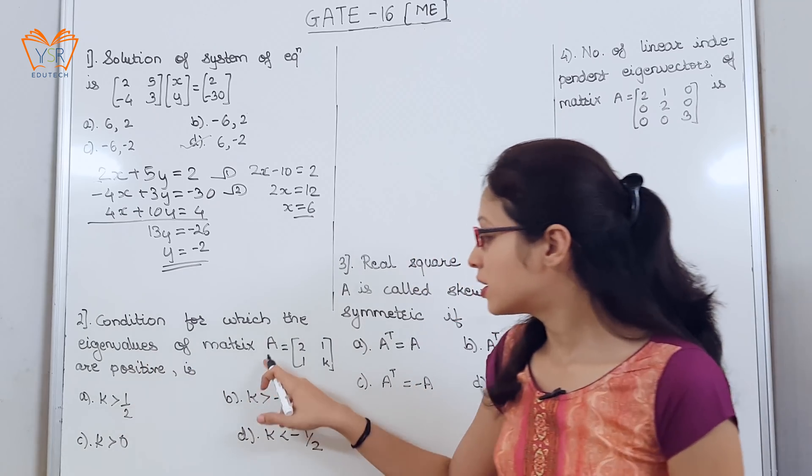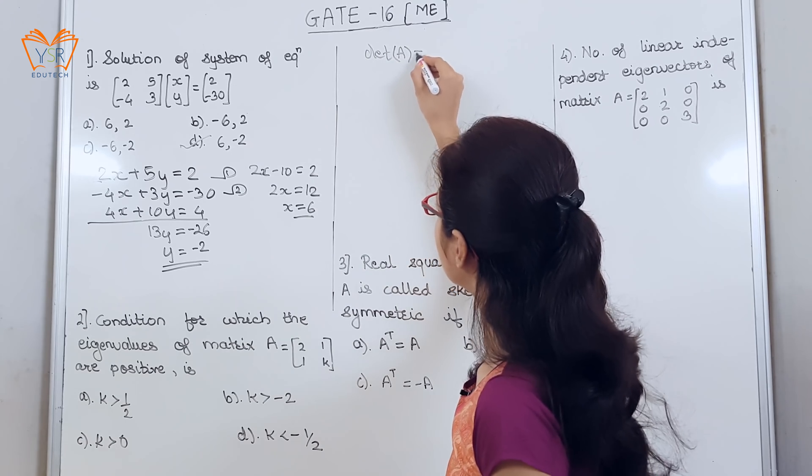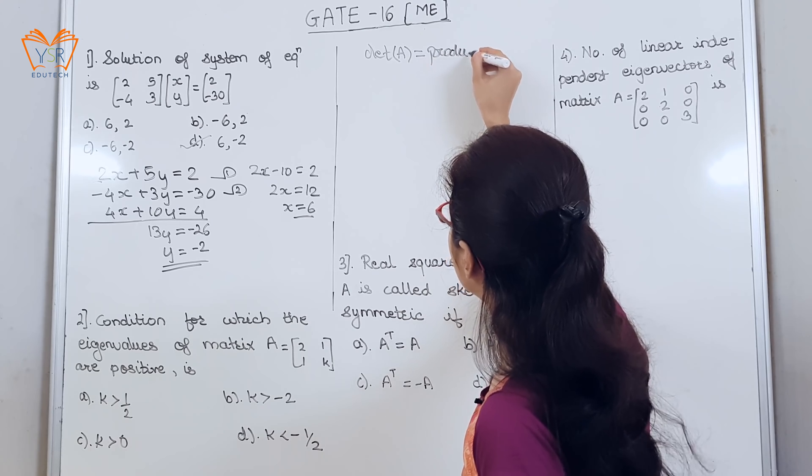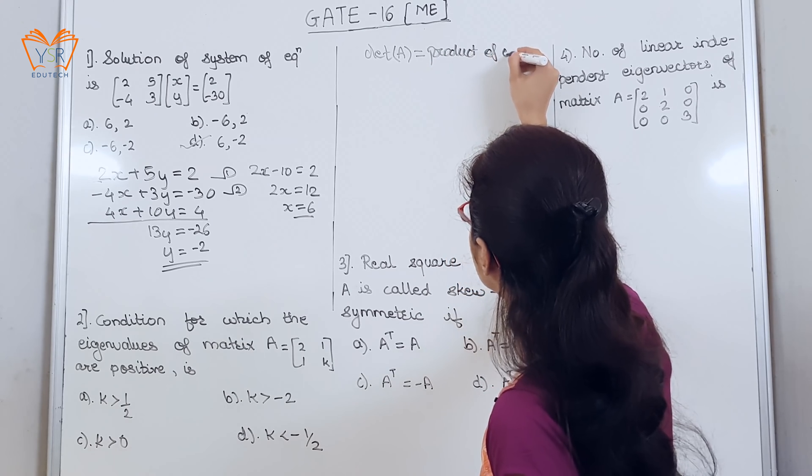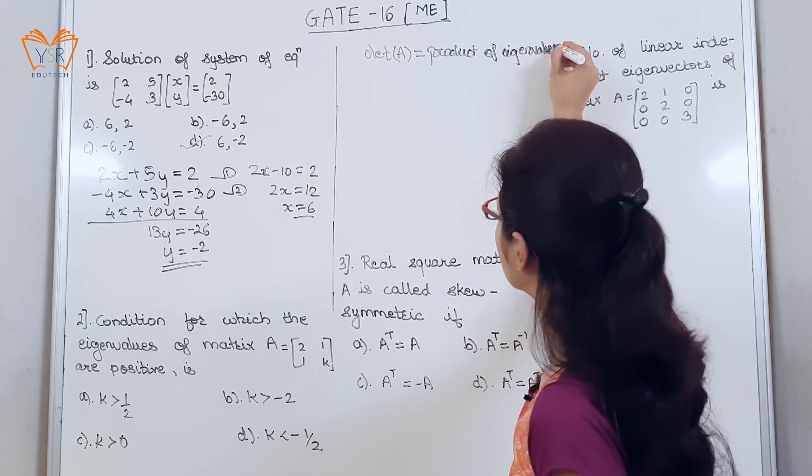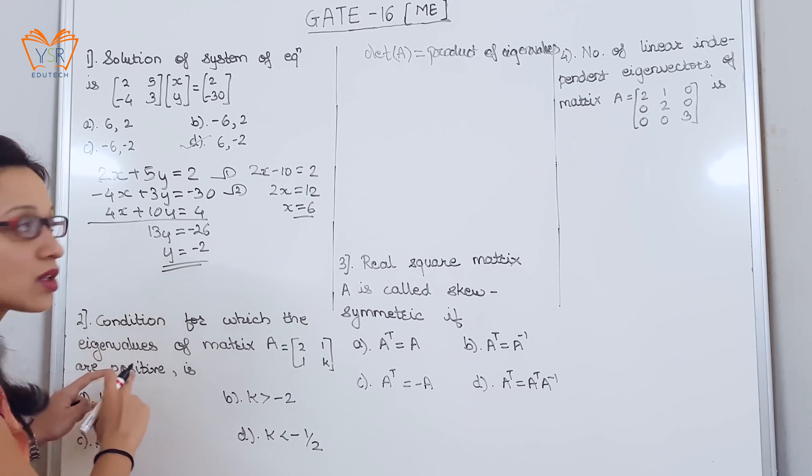We know that determinant of A, one of the properties of eigenvalues states determinant of A is equal to product of eigenvalues. Now, they have stated that eigenvalues are positive.